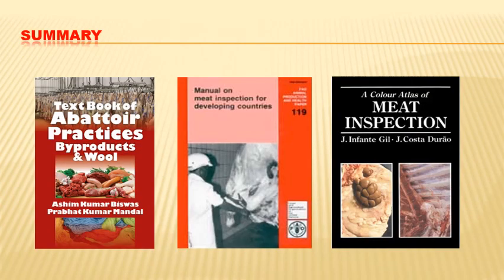Summary of today's lecture: we discussed post-mortem inspection — what it is, its importance, purpose, objectives, basis, requirements, basic principles, approaches, and the detailed procedure for inspection of the head, visceral organs, and carcass in various species. Mainly discussed in respect of bovine, but other species are almost similar. Finally, we covered the decisions to be taken and the basis for such decisions. Thank you for listening. Hope it is easy to understand — please read from the lecture notes.